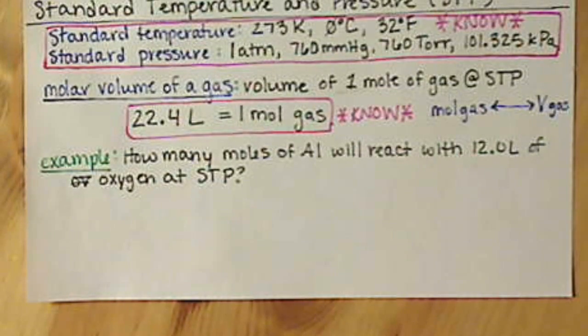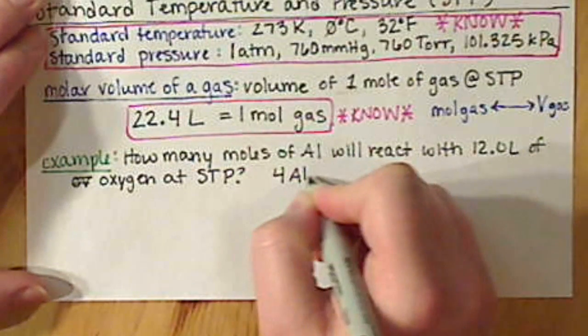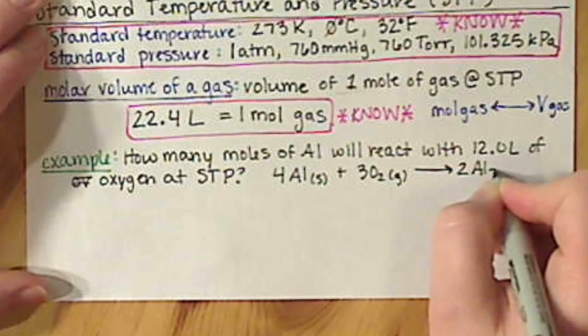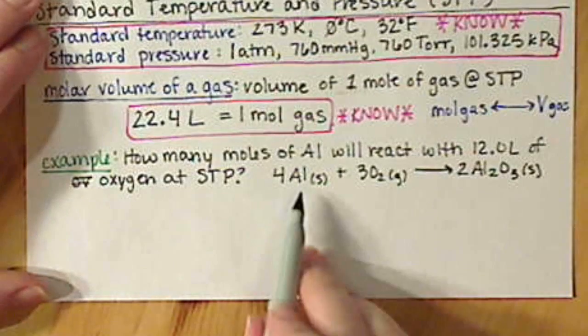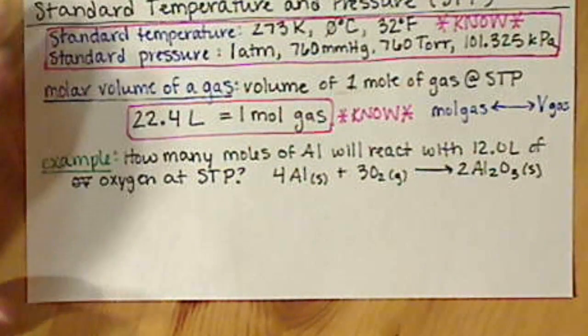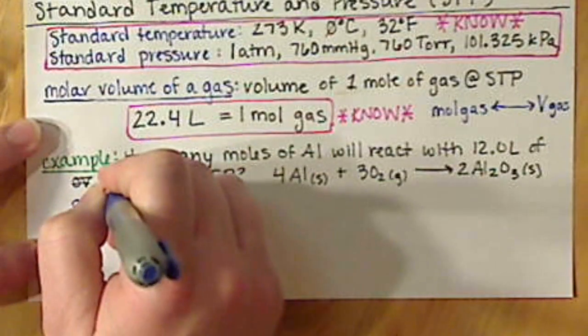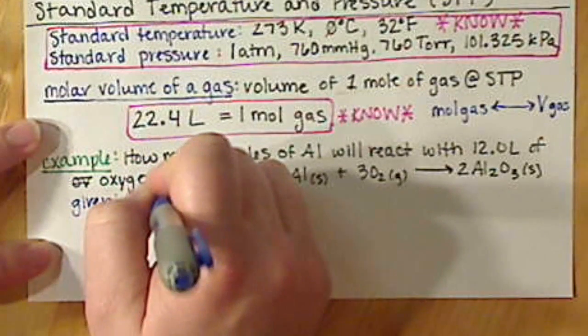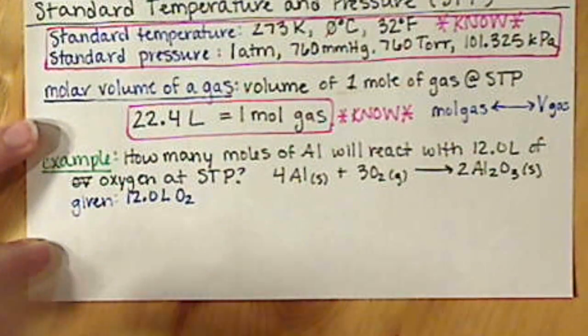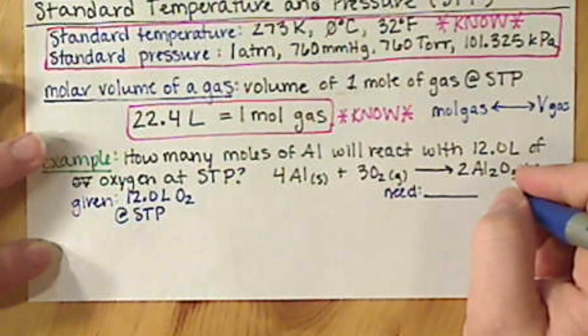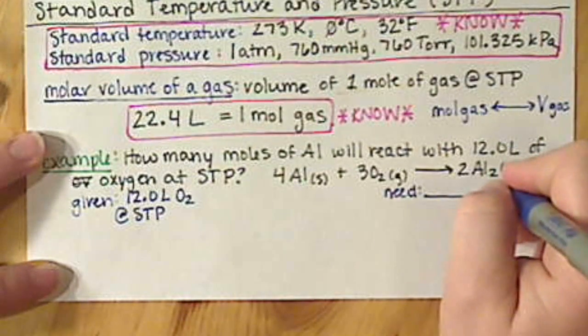We have: how many moles of aluminum will react with 12 liters of oxygen at STP? And we've been given a balanced chemical equation for this. It's a combination reaction. We take aluminum metal, oxygen gas to form aluminum oxide. So we have been given 12.0 liters of oxygen, and we know that this is at STP. And we need the amount of moles of aluminum.